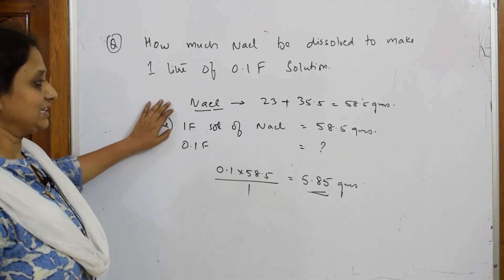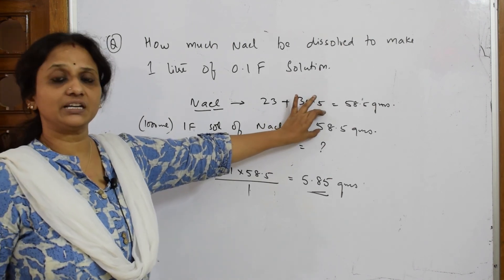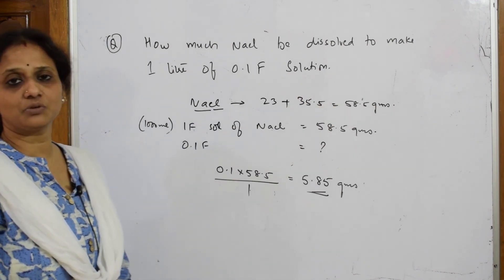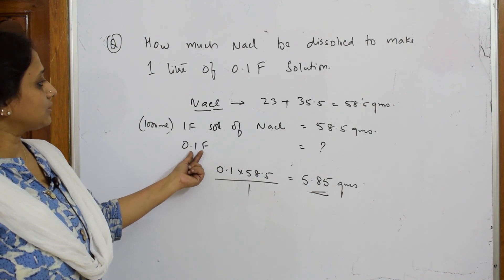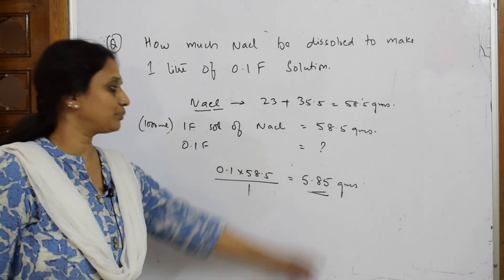But here they've given comparison: one formal, that is one liter, requires 58.5 grams according to the particular molecular formula weight. They've given me to calculate for 0.1 formal, I did, and I got 5.85 grams.